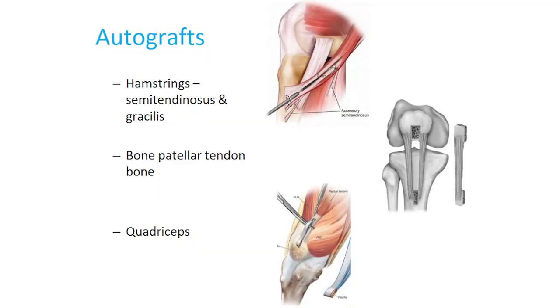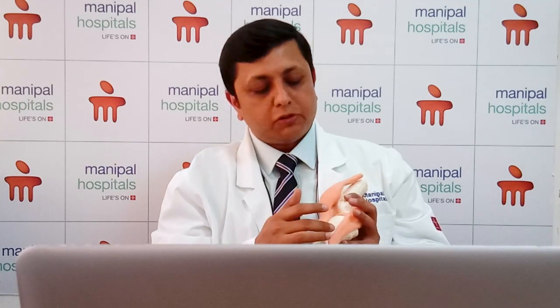We take a ligament from the patient's own body. The commonly used autografts include the hamstring graft, the bone-patellar tendon-bone graft, and the quadriceps graft. These are the three main grafts used depending on the requirement of the individual patient, with the hamstring graft being the most commonly used.